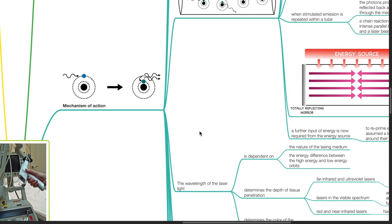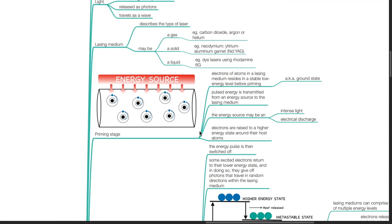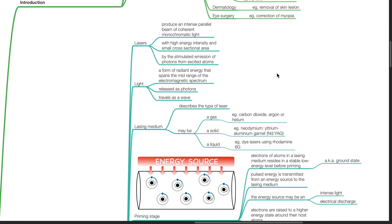Mechanism of Action of Lasers. Lasers produce an intense parallel beam of coherent monochromatic light, with high energy intensity and small cross-sectional area, by stimulated emission of photons from excited atoms. Light is a form of radiant energy that spans the mid-range of the electromagnetic spectrum. It is released as photons and travels as a wave.